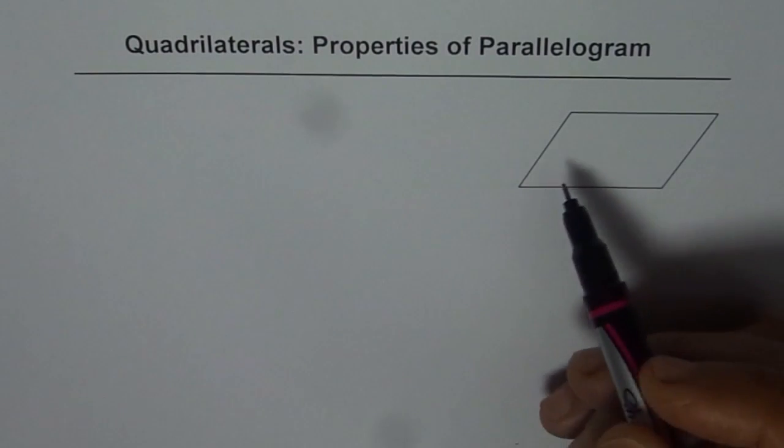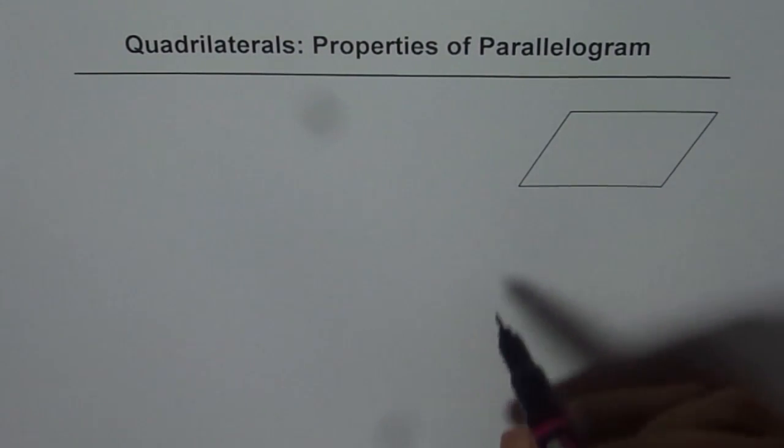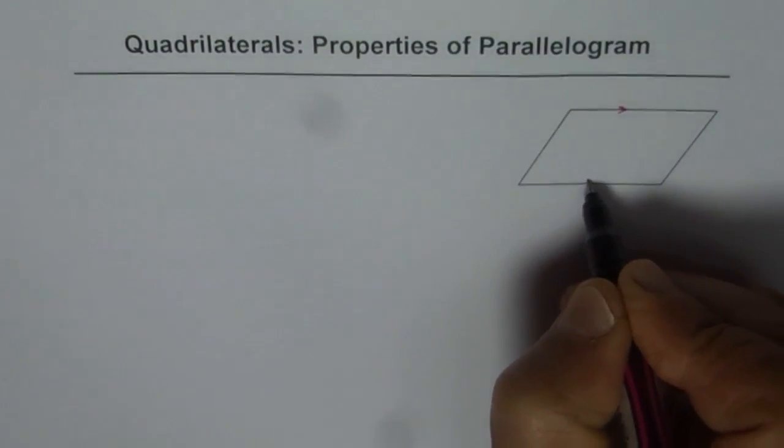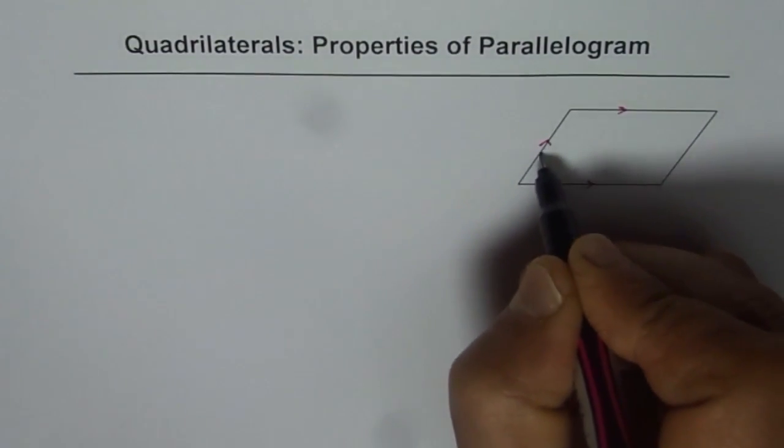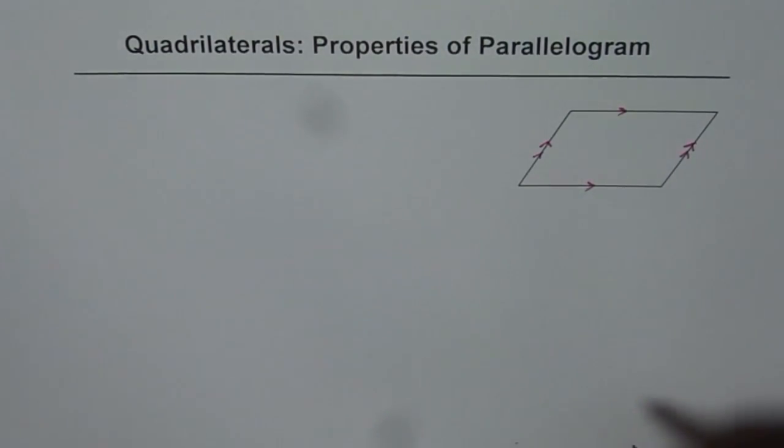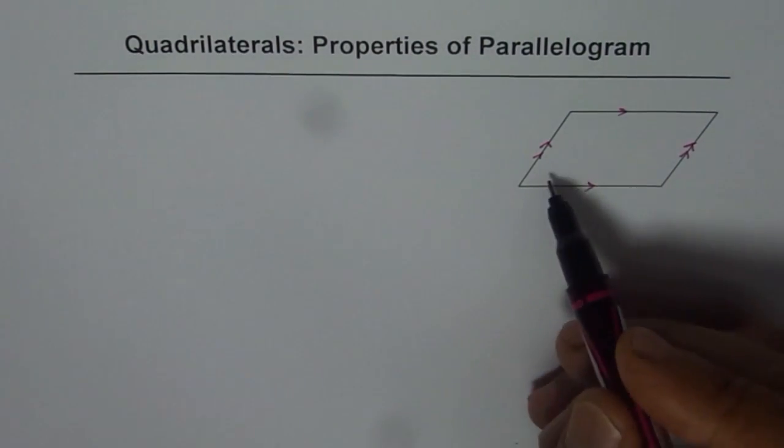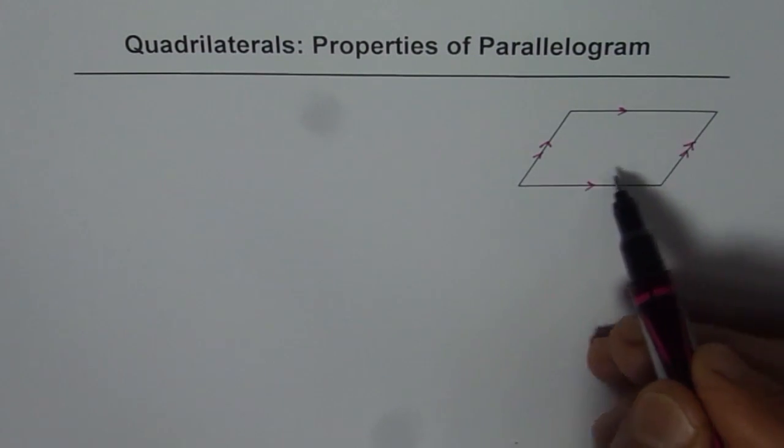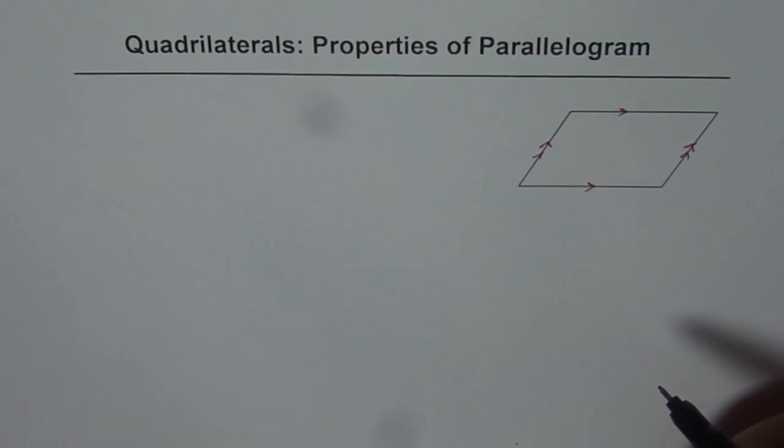Here are a few. You can see it is a quadrilateral. It has four sides. Now opposite sides of a parallelogram are parallel. So it has two pairs of parallel sides. And you can see there are two acute angles and two obtuse angles. Sum of all four angles in a quadrilateral is always 360 degrees.